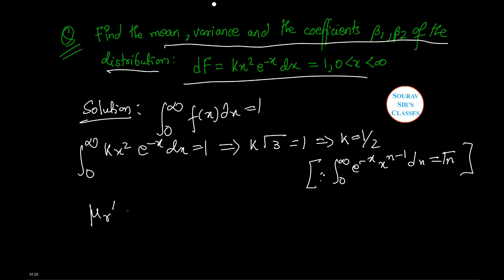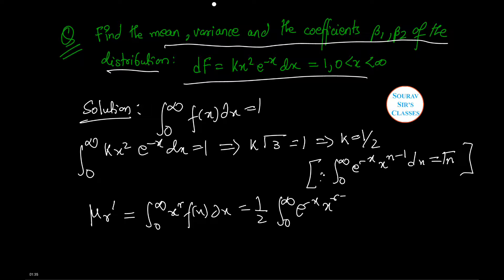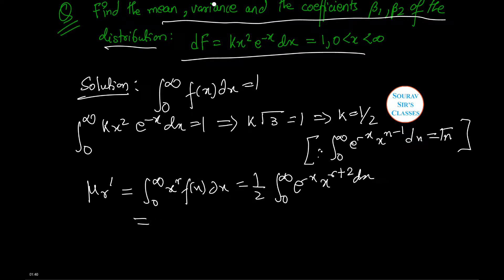Now, mu r dash equals the integral from 0 to infinity of x to the power r times f(x) dx, which equals 1/2 times the integral from 0 to infinity of e to the power minus x times x to the power r plus 2 dx. This equals 1/2 times gamma(r plus 3), which is equal to 1/2 times (r plus 2) factorial.